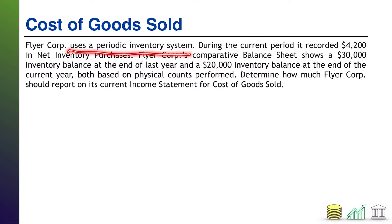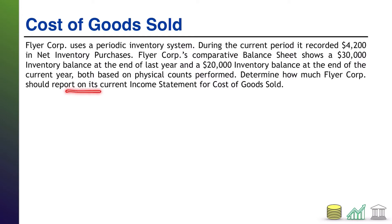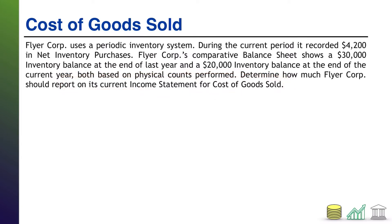FlyerCore uses a periodic inventory system. During the current period, it recorded $4,200 in net inventory purchases. FlyerCore's comparative balance sheet shows a $30,000 inventory balance at the end of last year and a $20,000 inventory balance at the end of the current year, both based on physical inventory counts performed. Determine how much FlyerCore should report on its current income statement for cost of goods sold.